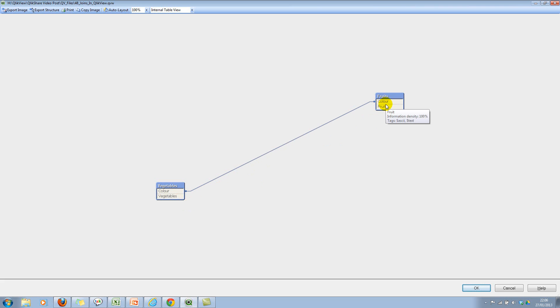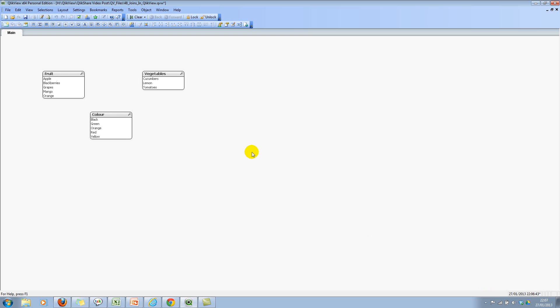If I go ahead and reload this and press Ctrl+T, here QlikView is performing implicit join and it's using color field as a key field to link between fruits and vegetables. It's pretty straightforward. Now let's say that we wanted to perform an explicit join.